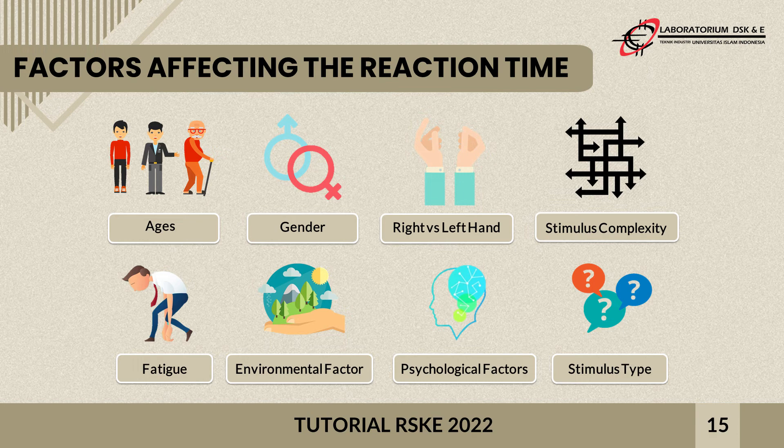The next factor is gender. In a study examining the reaction time of limb movements between men and women, it was found that women react more slowly than men. Regarding right versus left hand, each hemisphere of the brain has different specific tasks: the left hemisphere is thought to be the verbal and logical brain, while the right hemisphere regulates creativity, spatial relationships, facial recognition, and emotions.